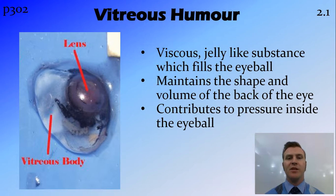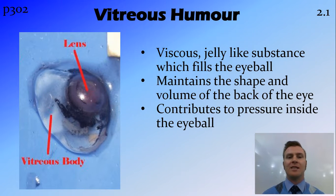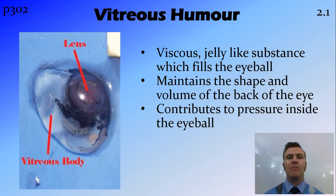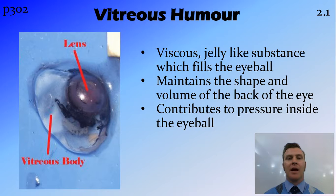The vitreous humour, on the other hand, is a jelly-like substance found in the back chamber — the posterior chamber — of the eye. It maintains the shape and size of the eye at the back, ensuring there is enough pressure for everything to be full and working.